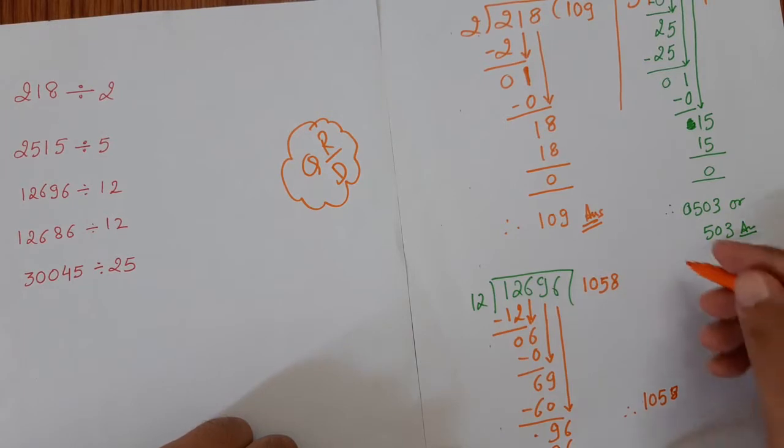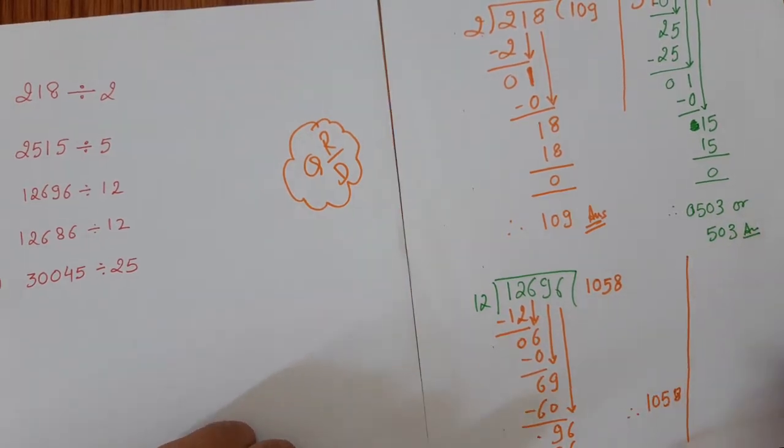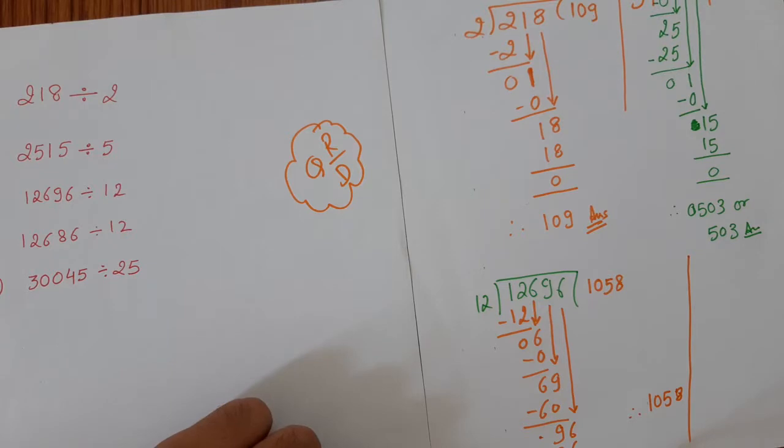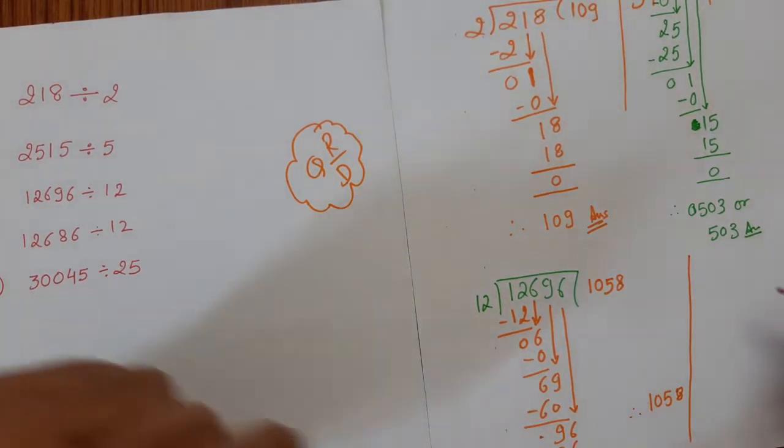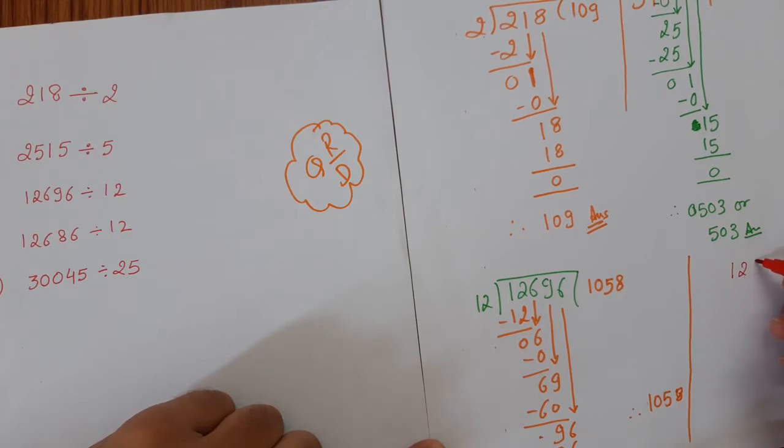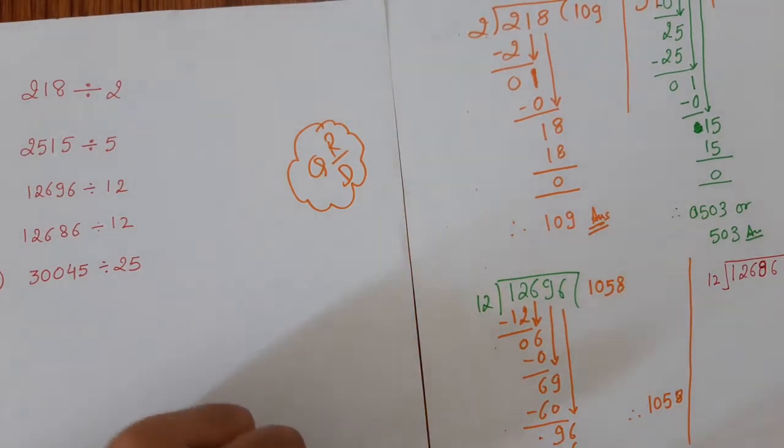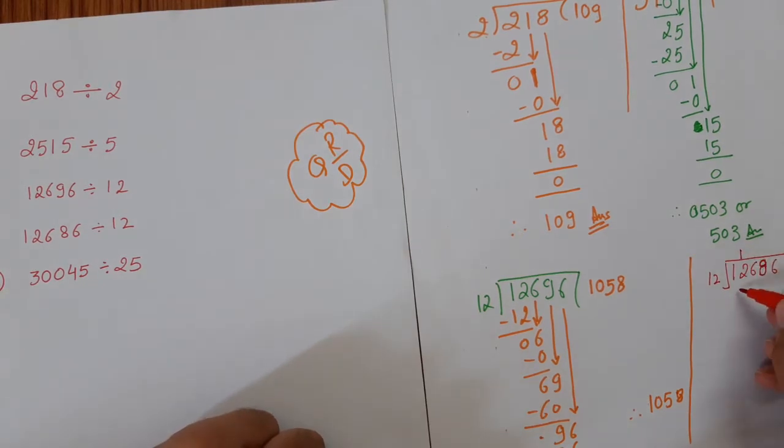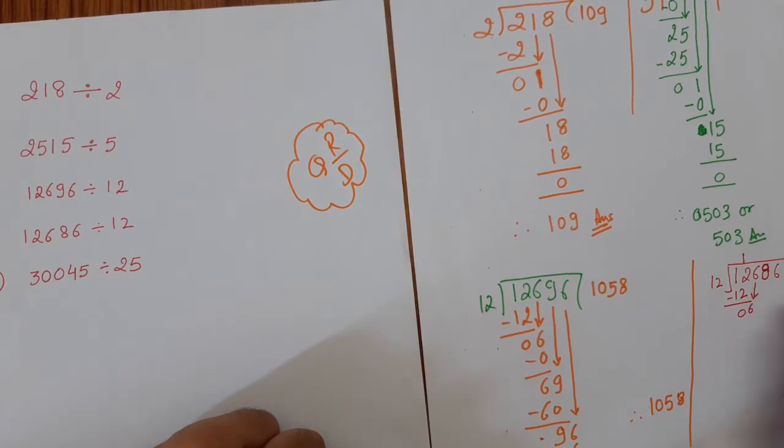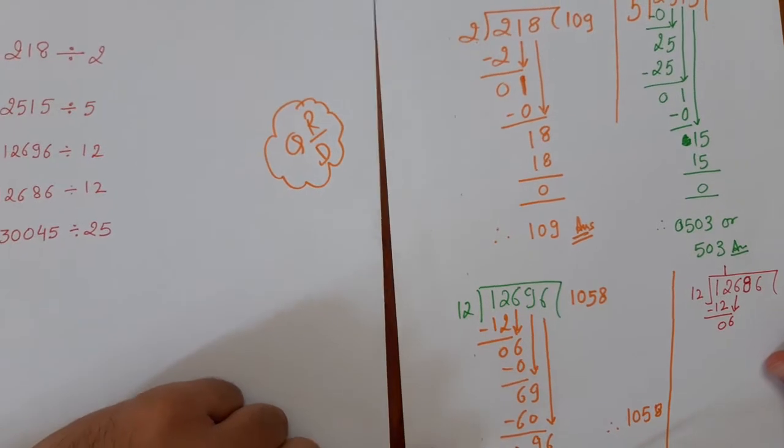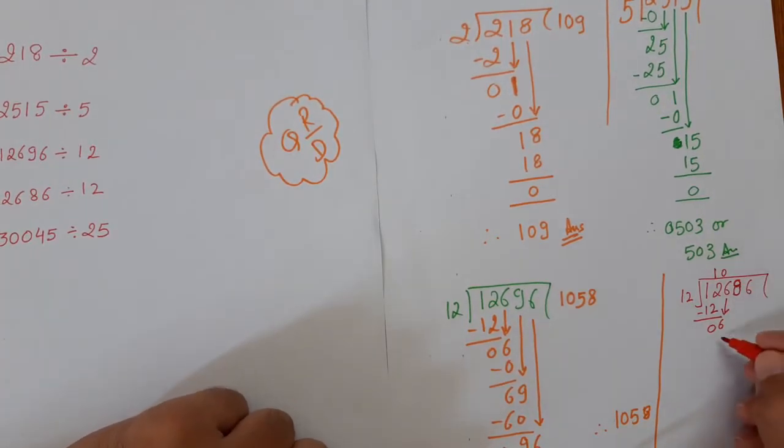We will take a similar question like this, but this time I will take a different number. So 12686 divided by this time, 12686 divided by 12. So in this case 12 times 1 is 12. 0, 6. Let's repeat the process. 0, 0.